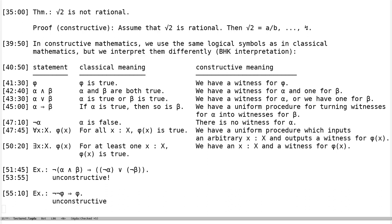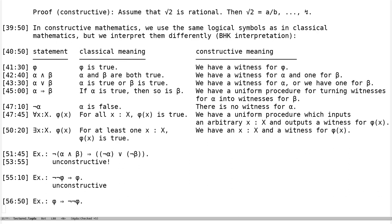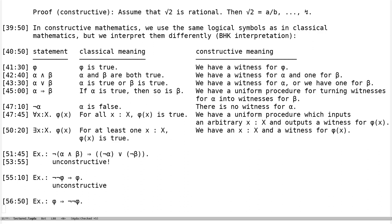In contrast, φ → ¬¬φ is something we do have in constructive mathematics. The meaning: there is a uniform procedure which transforms witnesses for φ into promises that there cannot be a witness for ¬φ. Of course — if we have a witness for φ, then there cannot be a witness for its negation, else everything would be inconsistent.